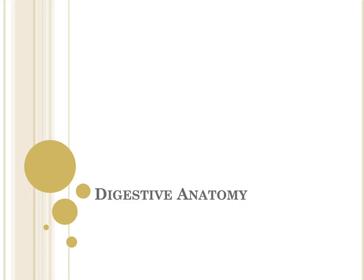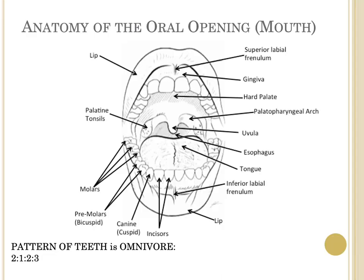Let's take a look at all of the rest of the anatomy within the digestive system that's not involved directly with the alimentary canal. The first thing we're going to look at is the anatomy of the oral opening.